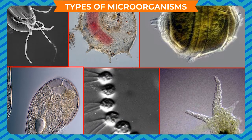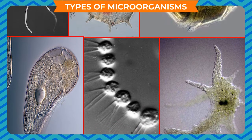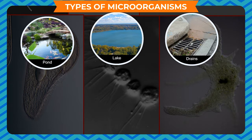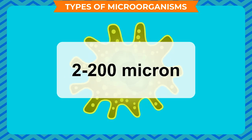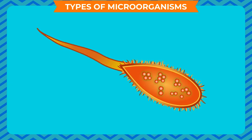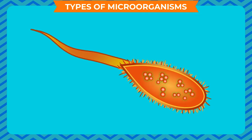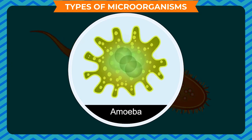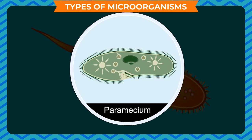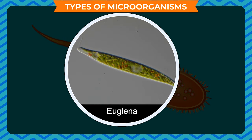Protozoa (singular: protozoan) are simple microscopic unicellular organisms mostly found in stagnant ponds, lakes, drains, moist soil, and ditches. Some protozoa are symbiotic and live in the gut of termites. The size of a protozoan varies from 2 to 200 microns, and the single cell is capable of performing all life-giving functions. Common protozoa include amoeba, paramecium, euglena, and trypanosoma. Amoeba traps food and moves with pseudopodia; paramecium has cilia for locomotion; euglena has a flagellum and possesses chlorophyll, making it a connecting link between plants and animals.